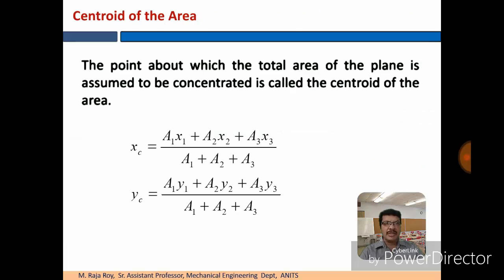Then centroid of the area. The point about which total area of the plane is assumed to be concentrated is called the centroid of the area. x-coordinate you can calculate using this equation: a1 x1 plus a2 x2 plus a3 x3 by a1 plus a2 plus a3. For calculating the centroid of the y-coordinate, yc equal to a1 y1 plus a2 y2 plus a3 y3 by a1 plus a2 plus a3.